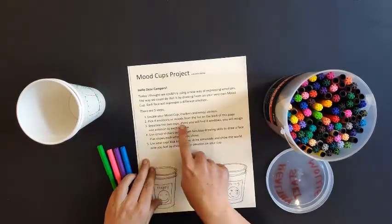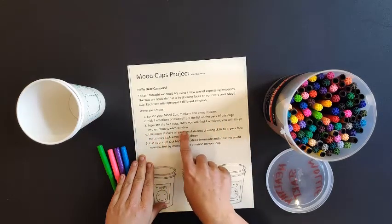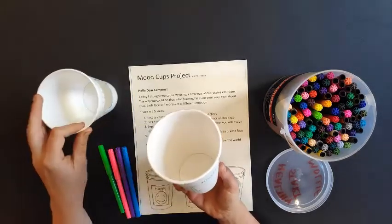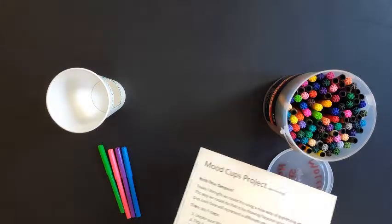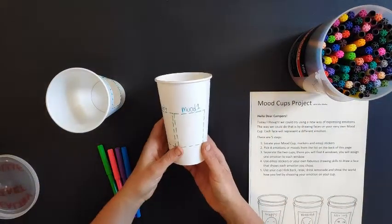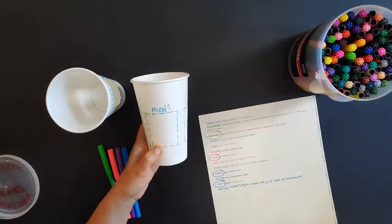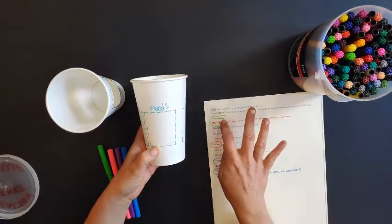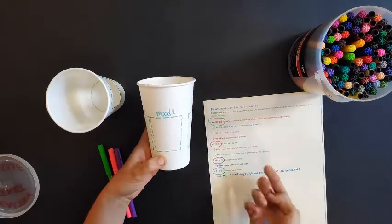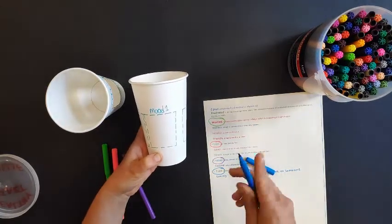All right, separate the two cups. There you'll find four windows. You'll assign one emotion to each window. Okay, there we go. I've got mood one. So I think what I'll do next is I'll put the first emotion I picked in mood one. So I'm going to draw a face to show that emotion. Let's see how I do.